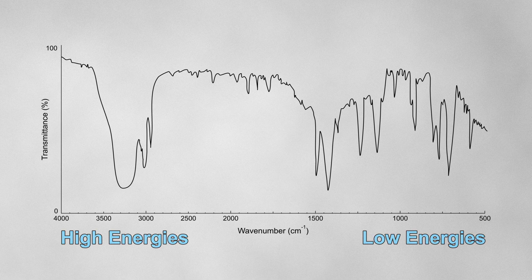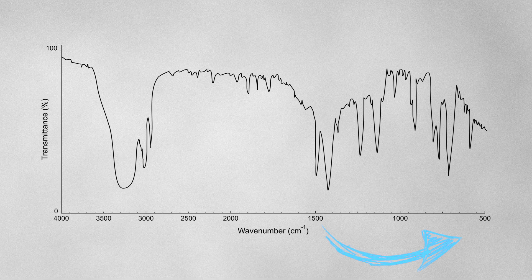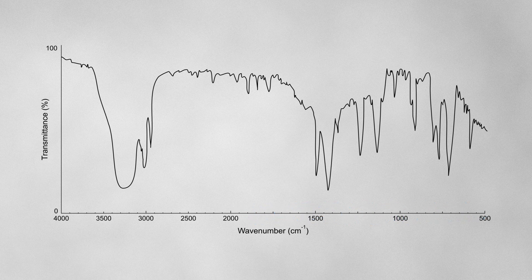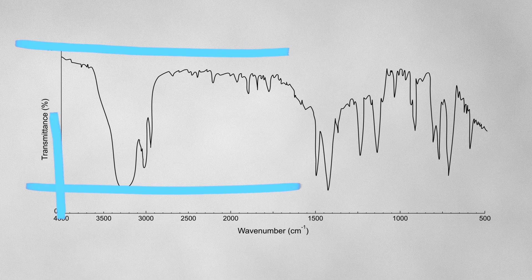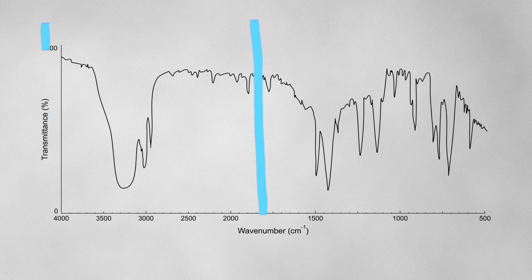Notice that the scale runs backwards, with the smaller numbers on the right and the larger numbers on the left. Also notice that the scale changes at 2000 centimeters to the minus one, so that the right hand side of the spectrum is more detailed than the left. We'll come on to why this is later in the video.